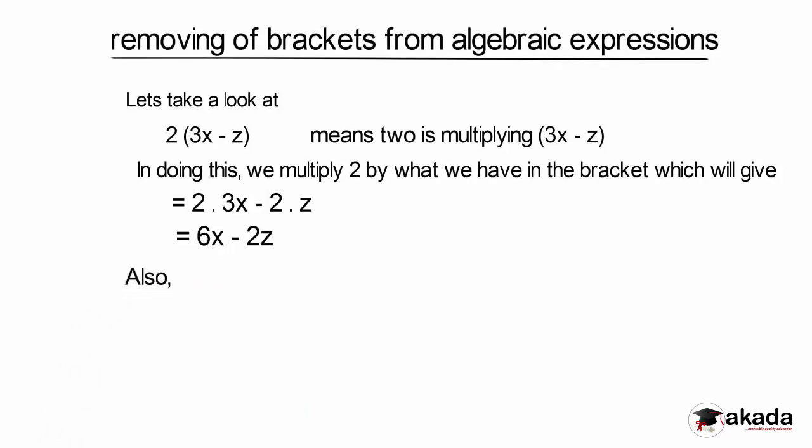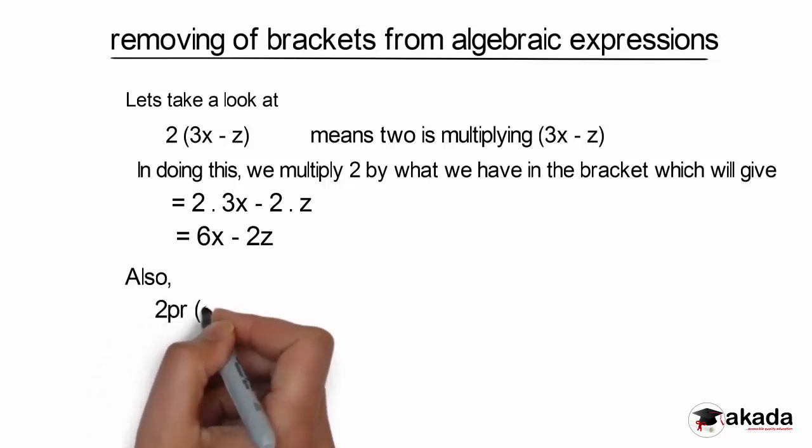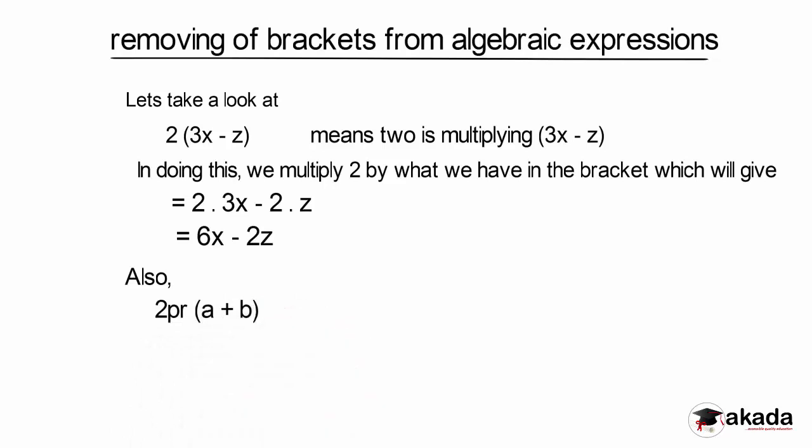Also, let's take the second example: 2pr into bracket a plus b. By opening the bracket, we multiply 2pr by what we have in the bracket one by one. So I have 2pr times a plus 2pr times b. My answer is 2pra plus 2prb.